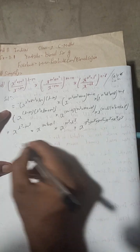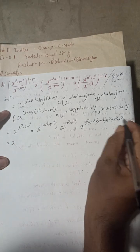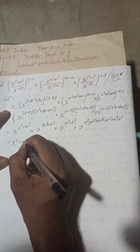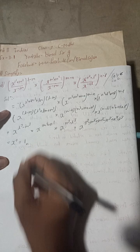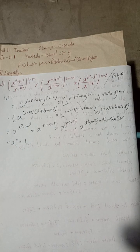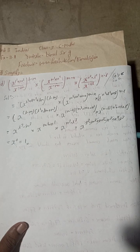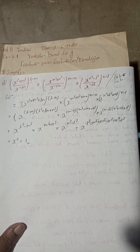All the X terms cancel, so here we have X to the power (L³ − M³ + M³ − N³ + N³ − L³), which equals X to the power zero. And X to the power zero is 1 — so this is the required solution of question 9d.